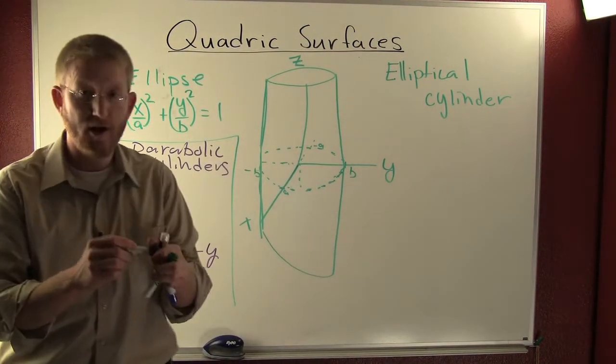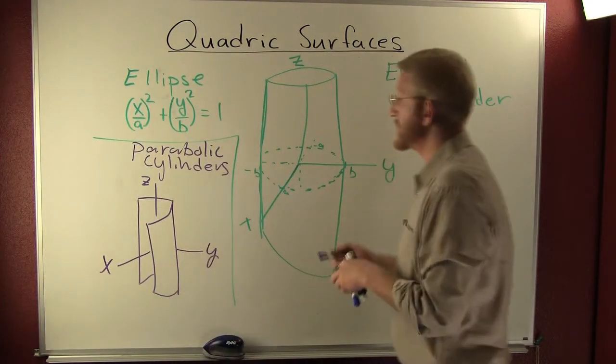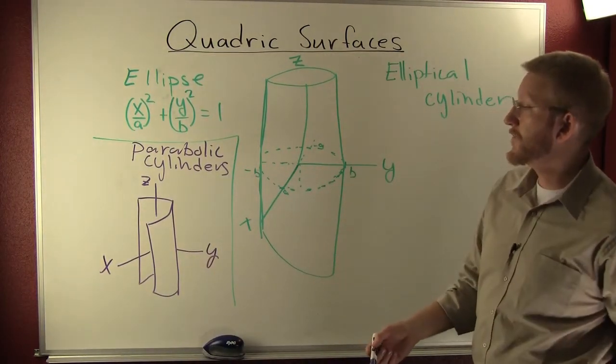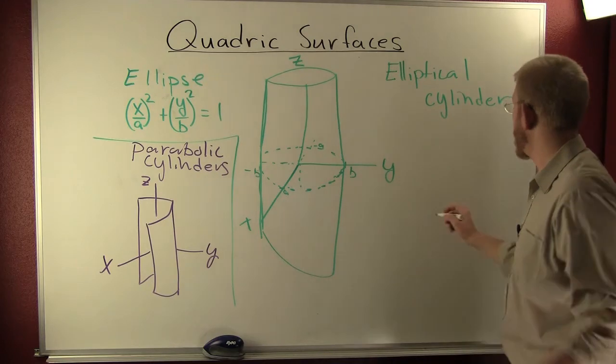Sometimes it's easier to draw them and then label your axes, up to the other side, and a parabolic cylinder, or also a hyperbolic cylinder, where you had your hyperbola.